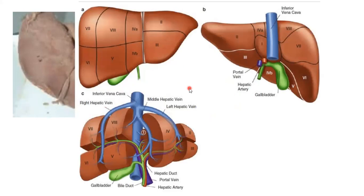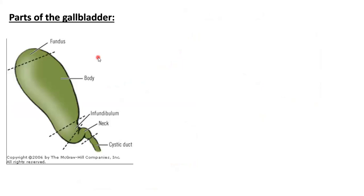The liver has eight surgical segments. Segment one is on the posterior surface; segments two through eight are on the anterior surface. The left lobe contains segments two and three, while segments four through eight are on the right lobe clockwise. Segment four A is at the top and four B at the bottom. The gallbladder sits at segments four and five. It is a pear-shaped organ with four parts: fundus, body, infundibulum, and neck.